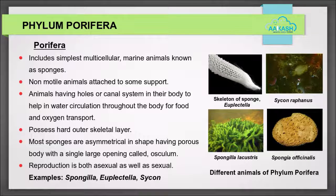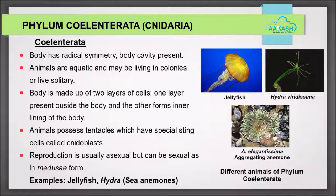Phylum Porifera includes the simplest multicellular marine animals, known as sponges. These are non-motile animals attached to some solid support. They have holes or a canal system in their body to help in water circulation throughout the body for food and oxygen transport. These animals possess a hard outer skeletal layer. Most sponges are asymmetrical in shape, having a porous body with a single large opening called the osculum. Reproduction is both asexual and sexual.